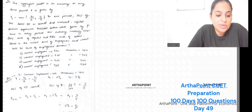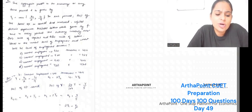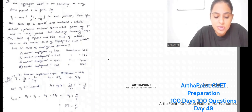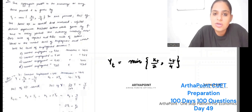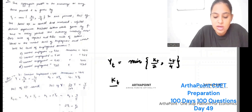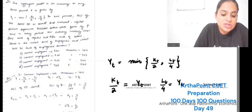Next question. The aggregate production function in an economy is given by Y_t = min(K_t/2, L_t/4). It's a min function — you equate whatever comes inside the min function. So K_t/2 = Y_t and L_t/4 = Y_t as well.